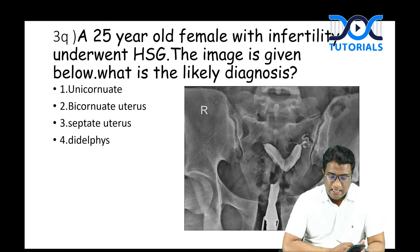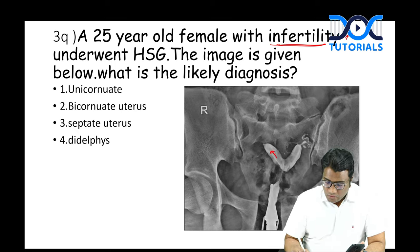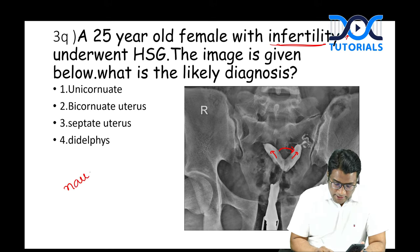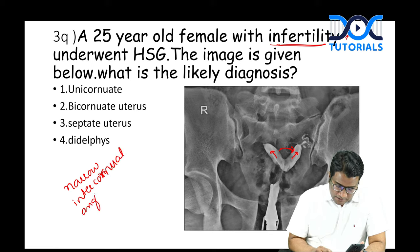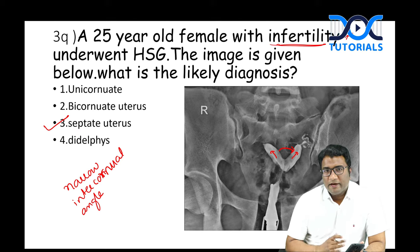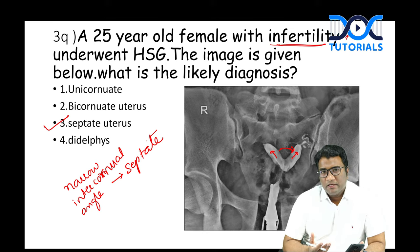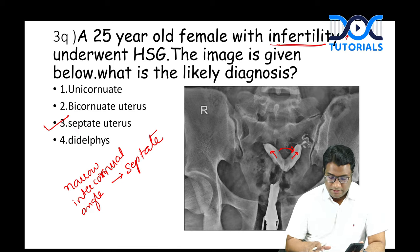The next question: a 25-year-old female with infertility underwent hysterosalpingography. The HSG image showed two cornua but with a narrow intercornual angle. A narrow intercornual angle commonly associated with infertility is most in favor of septate uterus. In bicornuate uterus, you would have a wide intercornual angle.